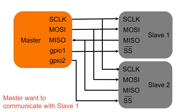During communication, the other slave nodes on the bus that have not been selected using their slave select line must disregard the input clock and MOSI signal.